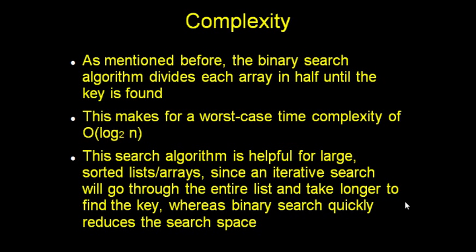As mentioned before, this binary algorithm divides the array in half every time until the key is found. This is a pattern most people will recognize as log 2n, or the opposite of 2 to the power of something, because you're dividing it in half every time. So the worst case complexity of this algorithm would be log with base 2n.